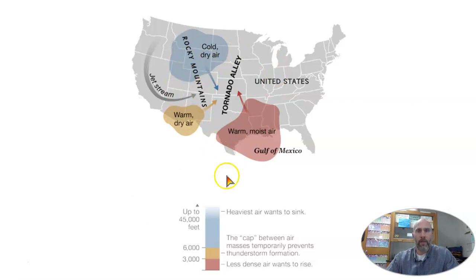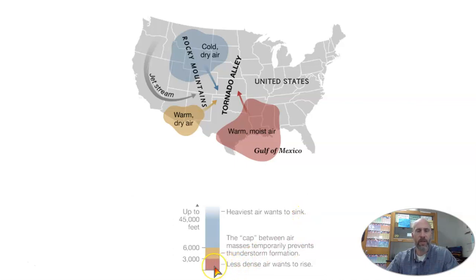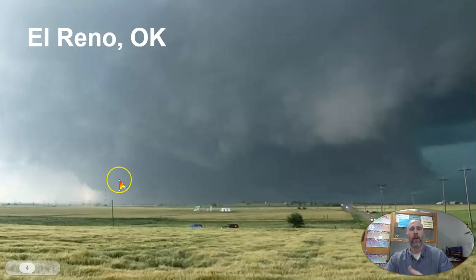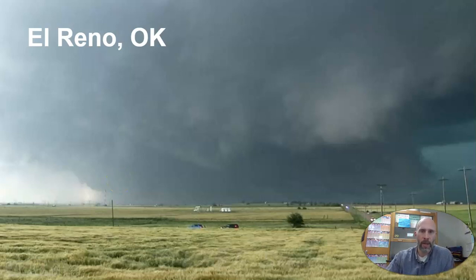That's kind of a top-down view. Now from a side view, down at the bottom you've got less dense air — your hot or warmer air — and then cool air up at the top that wants to sink down. We're going to use the El Reno, Oklahoma tornado as an example.